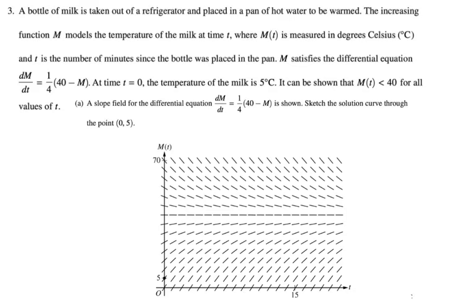A bottle of milk is taken out of a refrigerator and placed in a pan of hot water to be warmed. The increasing function m models the temperature of the milk at time t, where m of t is measured in degrees Celsius and t is the number of minutes since the bottle was placed in the pan. m satisfies the differential equation dm/dt equals 1/4 times the quantity 40 minus m. I bet we're going to have to solve that. At t equals 0, the temperature of the milk is 5 degrees Celsius.